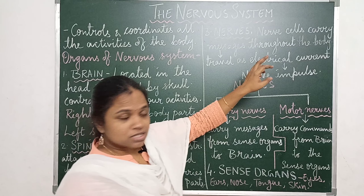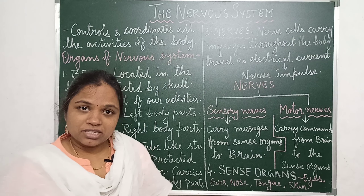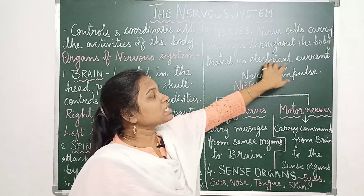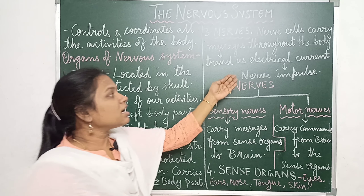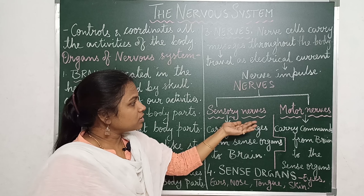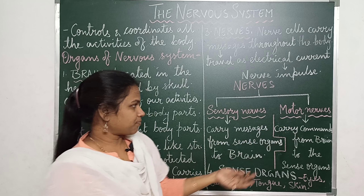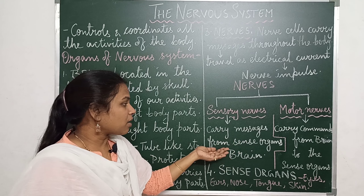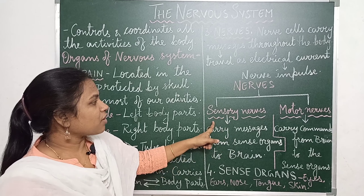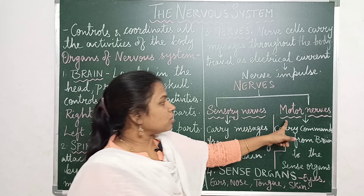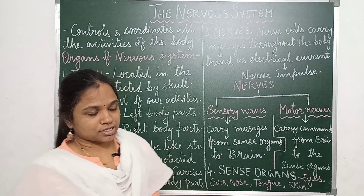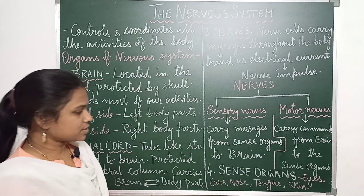Now come the nerves. These nerves are actually made up of tiny cells called neurons or nerve cells. These nerve cells carry messages throughout the body, and these messages actually travel as electrical current, which we call nerve impulses. Basically, nerves are of two types: sensory nerves and motor nerves. The sensory nerves carry messages from the sense organs to the brain. The motor nerves carry the commands of the brain to the sense organs.